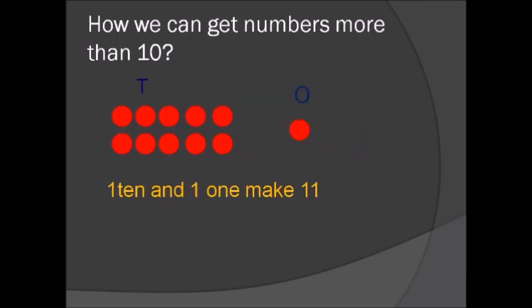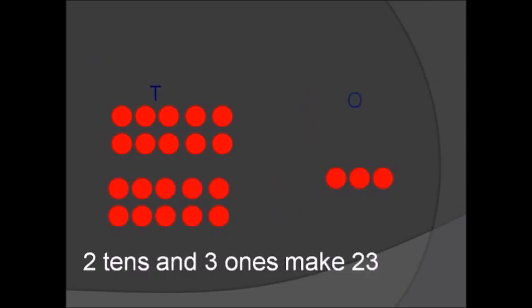How can we get the numbers more than ten? One ten and one make eleven. Two tens and three ones make twenty-three.